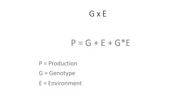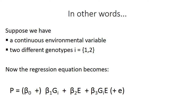In other words, suppose we have a continuous environmental variable and two different genotypes, one and two. The regression equation is given here.